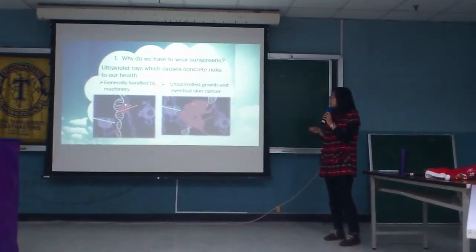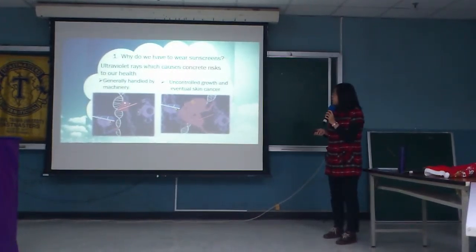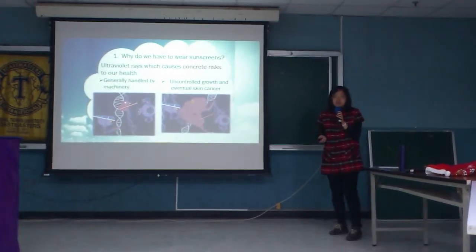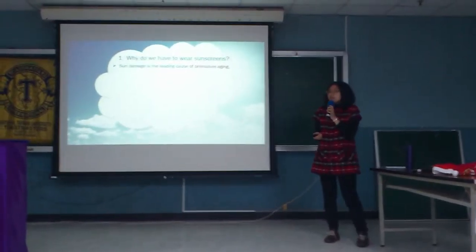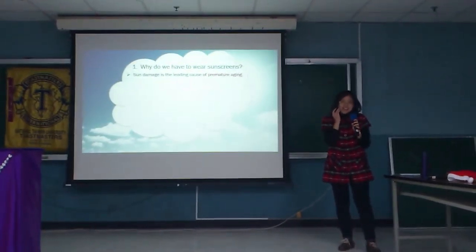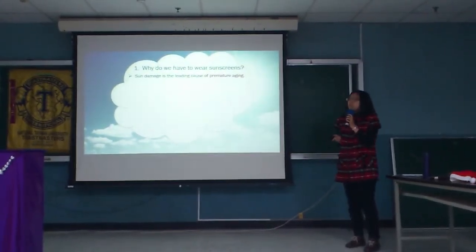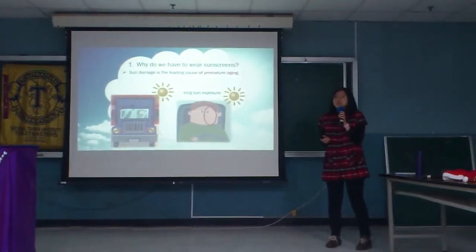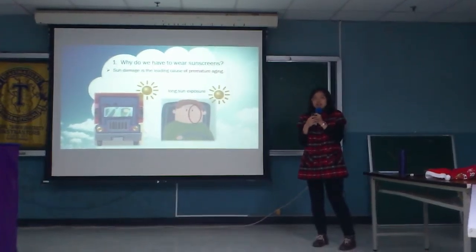The DNA in our cells is developing errors that are generally handled by machinery in our cells. However, the risks from the sun lead to errors that the cells may not be able to overcome, leading to uncontrolled growth and eventual skin cancer.